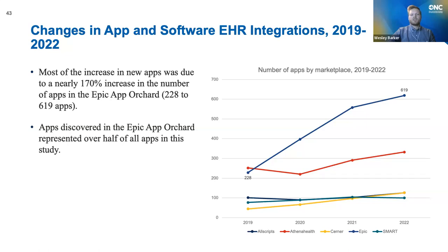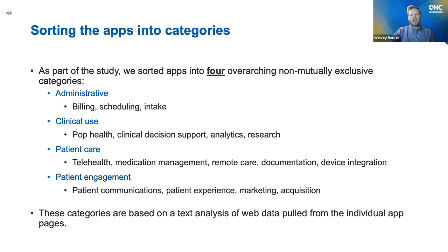Another key part of the study was looking at the apps themselves and what they do. We grouped apps into four non-mutually exclusive categories. Administrative: apps describing support for billing, payments, scheduling, patient intake, and basic check-in processes. Clinical use: focused on actual clinician use, including specific functionalities for patient care, population health, clinical system support, analytics, and research. Patient care: functionalities used by patients or clinicians including telehealth, remote care, and medication management. Patient engagement: focused on patient communication, patient experience, marketing, and acquisition — ways the clinician interacts with patients to get them more engaged in their healthcare.